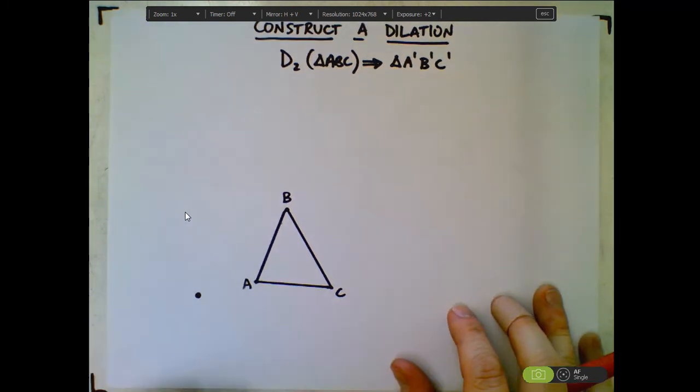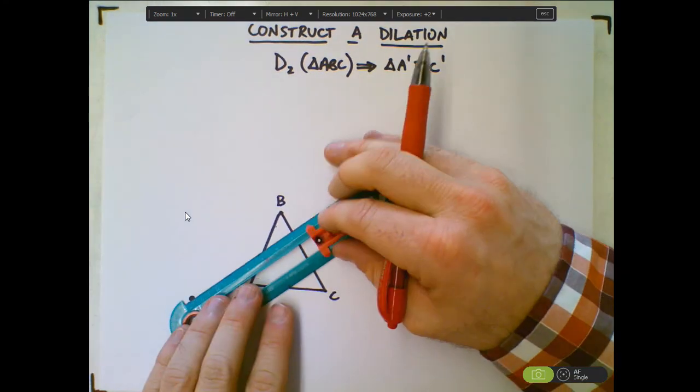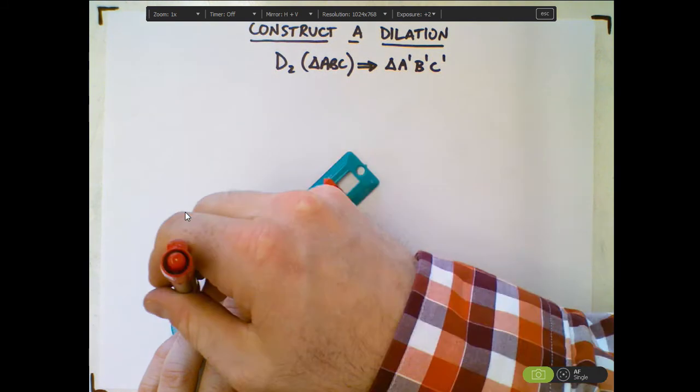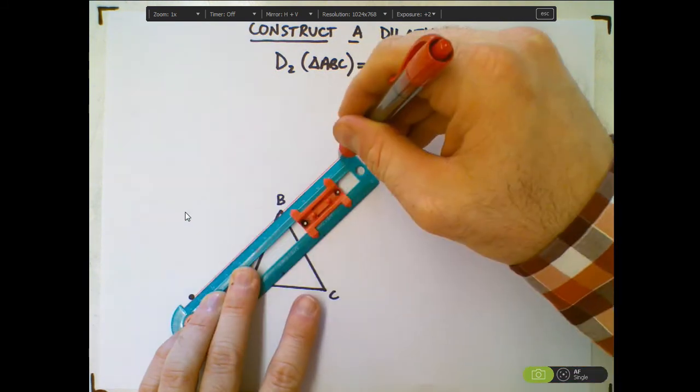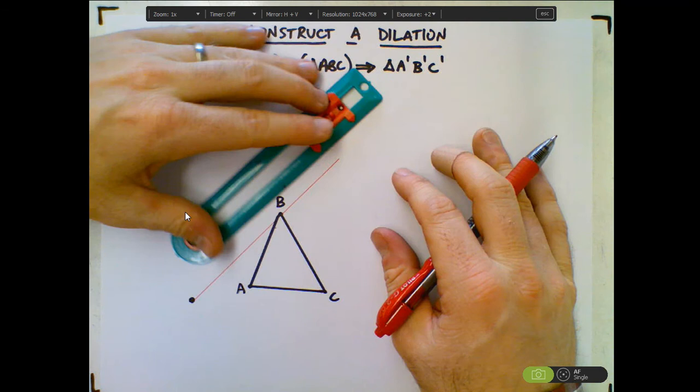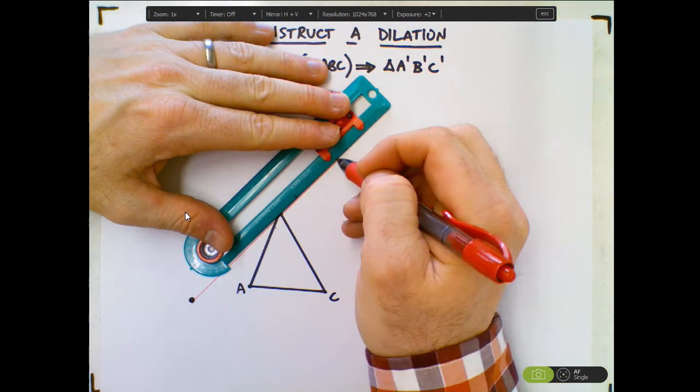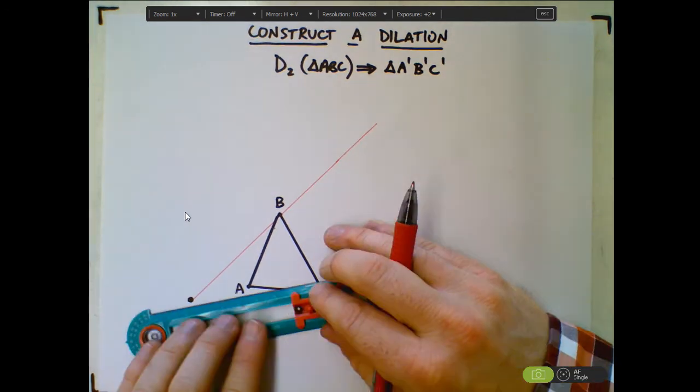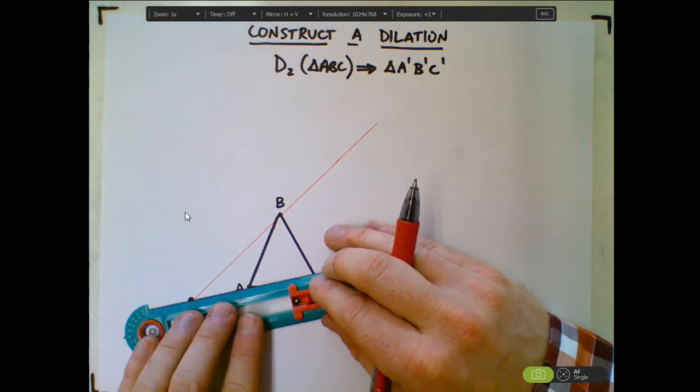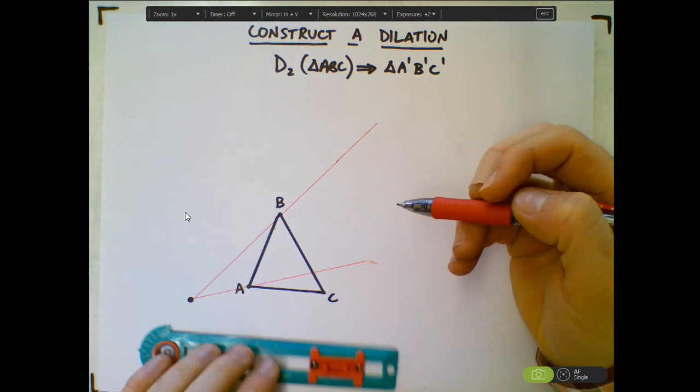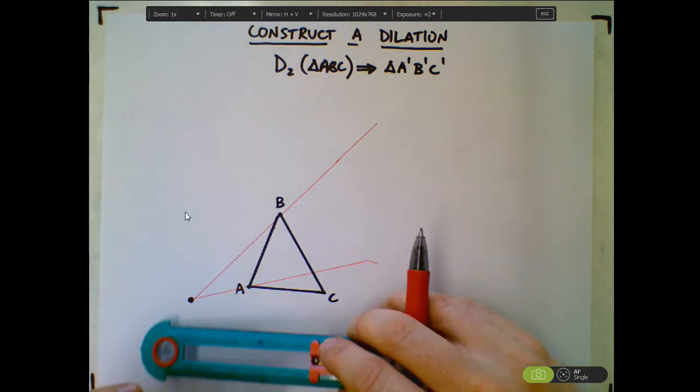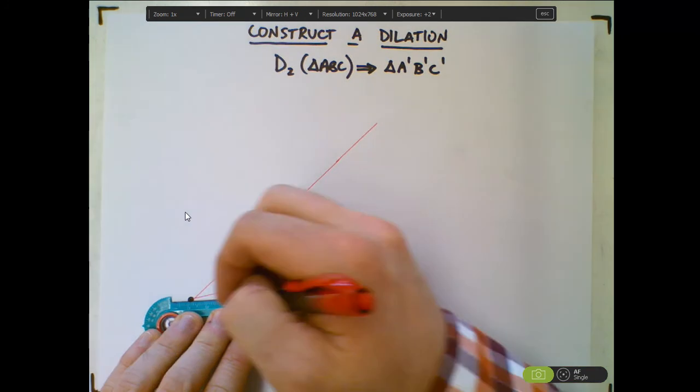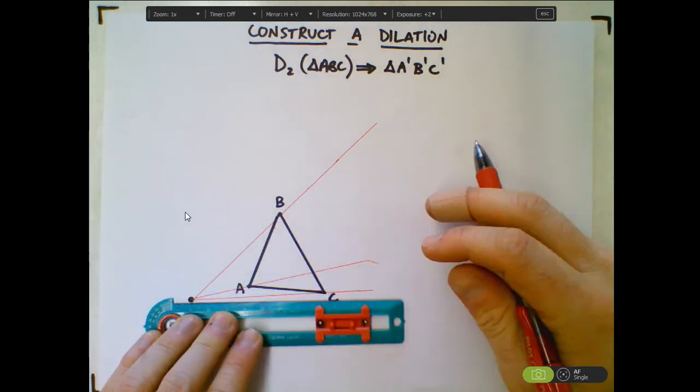So the first step is to draw lines connecting the center of dilation with each vertice of the triangle. And this one is probably going to have to be a little bit longer than that. Okay, so there's my first one. And then I want to draw through the center through A as well, through the center of my dilation, and then also through C. So three lines. This one's going to have to be longer.